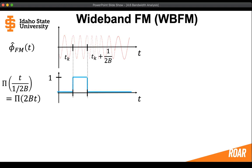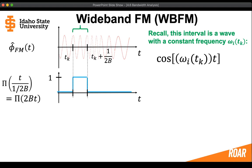If we want to look at just cell k, let's multiply our approximate frequency modulated signal by a rectangular function in time. If we make a rectangular box that goes from tk to tk plus 1 over 2b and multiply them together, we can find a part of the approximate message that contains an interval in cell k which contains just that constant instantaneous frequency. So we can analyze each cell which contains only constant instantaneous frequency at tk.